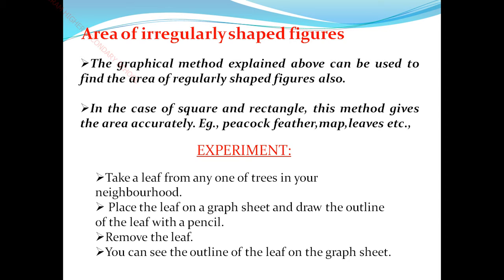Next, area of irregularly shaped figures. How can we measure the area of irregular shaped objects? For square, rectangle, and triangle we can accurately measure using formulas because they are regular shapes. But for irregular shaped objects we don't have a direct formula. Objects like peacock feathers, map outlines, and leaves come under irregular objects. For measuring these we have the graphical method.